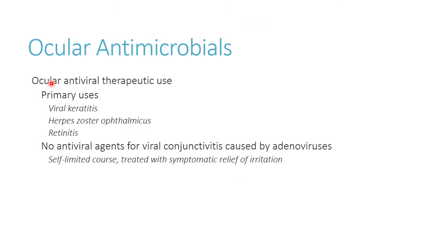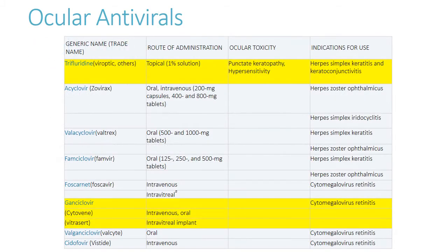Moving on to ocular antivirals — a lot of the viral conjunctivitis people get, like adenovirus, we don't have drugs for; it's mostly supportive care. There are some unique cases where we're treating herpes zoster or cytomegalovirus, so we have some antivirals available. These are mostly going to be used in immunocompromised patients, so you won't use them as frequently. The two we'll focus on are trifluridine and ganciclovir.